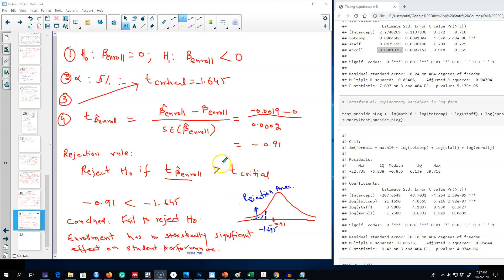In the previous video, I was showing you this example where we were interested in knowing student performance based on three variables, and we failed to reject our null hypothesis that enrollment has no impact on student performance. The results showed us that enrollment has no statistically significant impact on student performance, which means everything else being equal, students at smaller schools perform as well as students at larger schools.